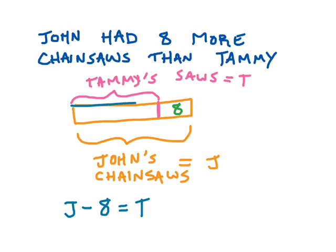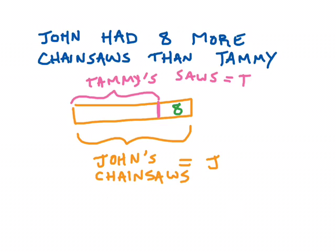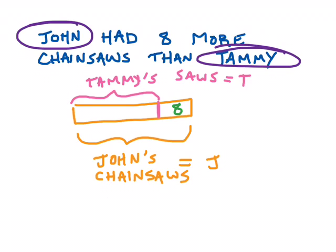The other way I could represent this is that Tammy's bar, if I added on the eight, is the same as John's bar. So T plus eight equals J. Those are actually the same idea — two ways of representing the same thing — and we'll talk about that more in another lesson. I'd also point out that this is basically what we would have gotten if we focused on the keyword ideas: John's chainsaws equals eight more than Tammy's, so Tammy's plus eight. Keywords can still be important; this is just another way of visualizing the problem.